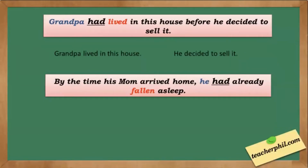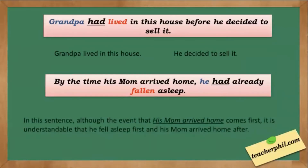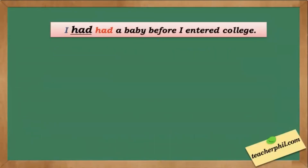Next example: By the time his mom arrived home, he had already fallen asleep. In this sentence, although the event that his mom arrived home comes first in the sentence, it is understandable that he fell asleep first and his mom arrived home after.